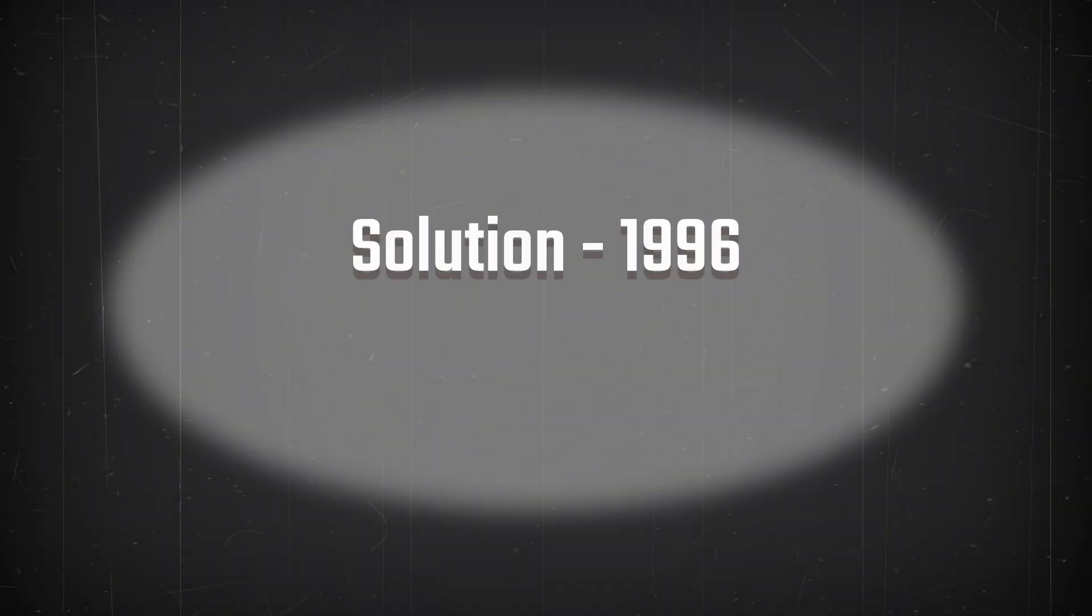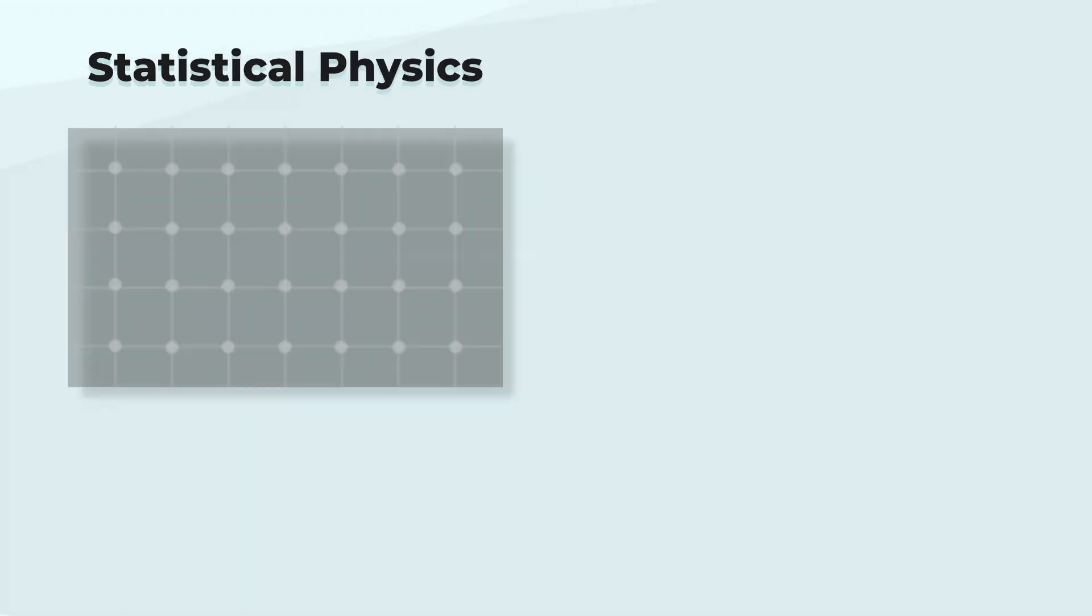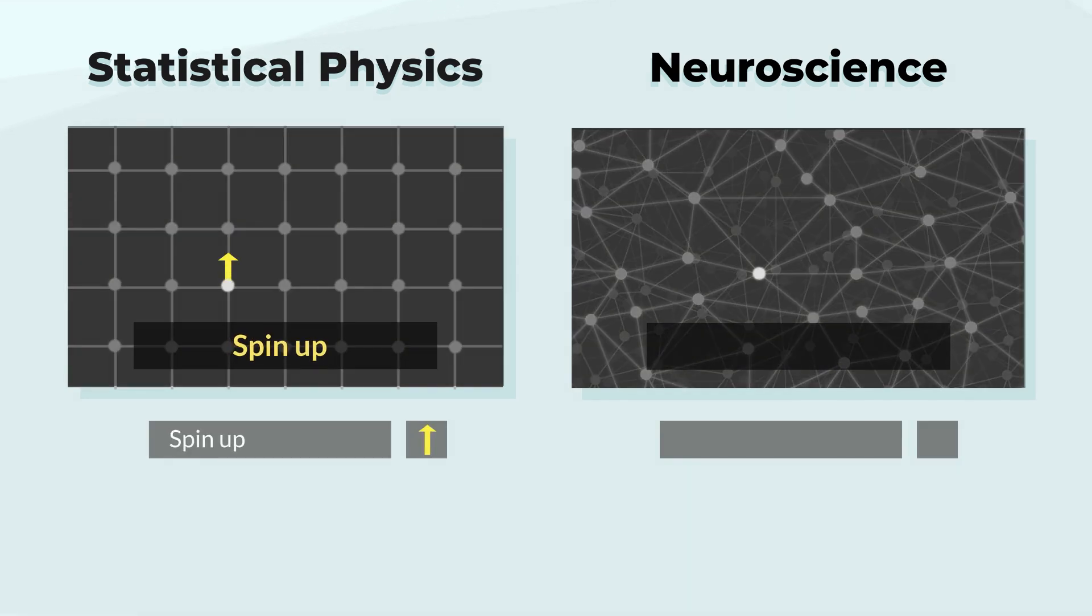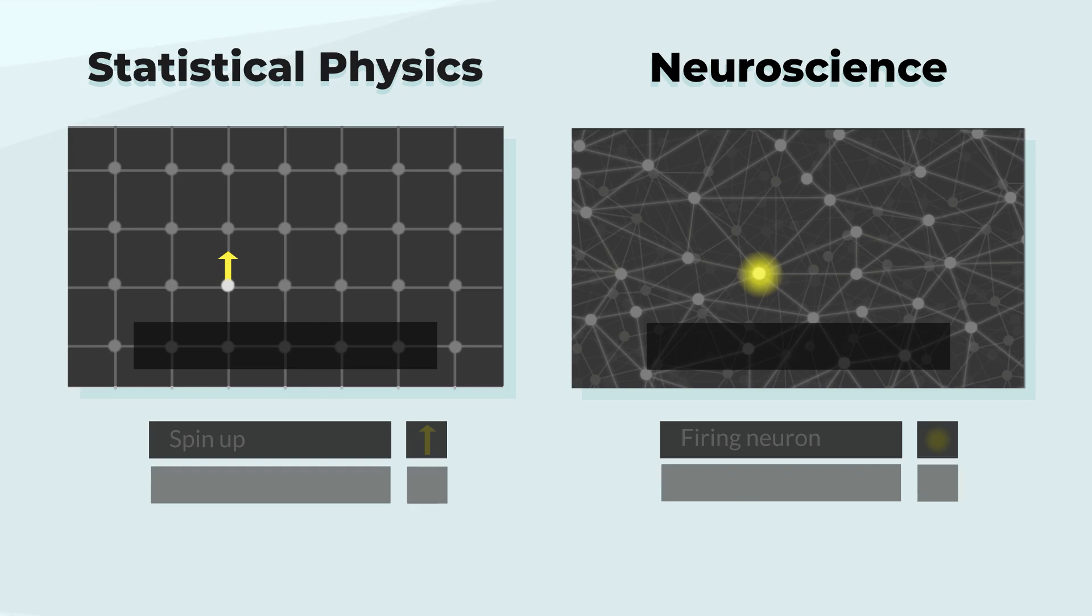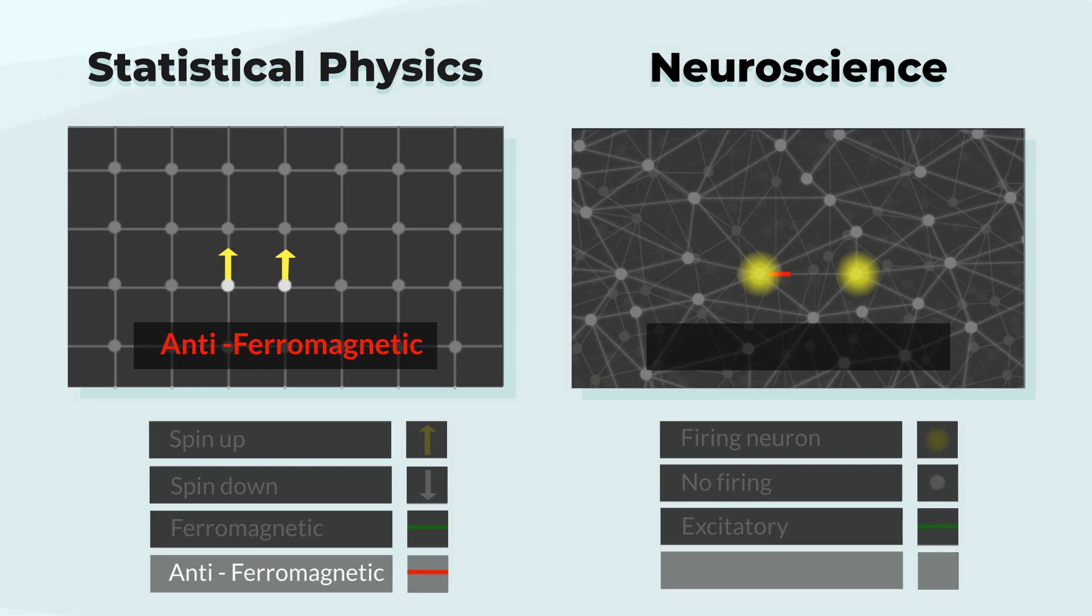Statistical physicists proposed a solution in 1996: excitation-inhibition balance. Let's translate statistical physics to neuroscience. A spin-up represents a firing neuron. Spin-down, a silent neuron. Ferromagnetic weights represent excitatory synapses. Antiferromagnetic weights represent inhibitory synapses.